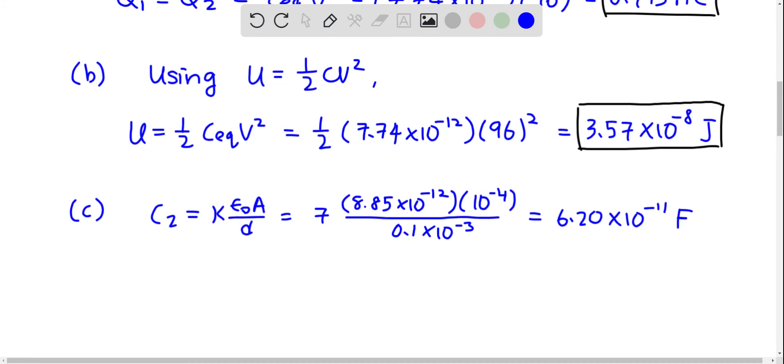Then you can find V2, which is Q over C2 times C2. And E2 is V over D. So we have Q over C2 times D. You can just substitute the given numbers.